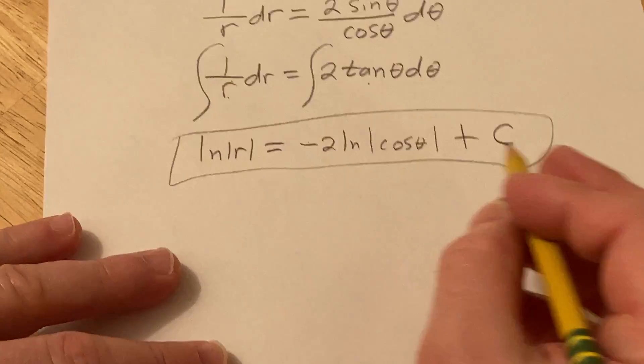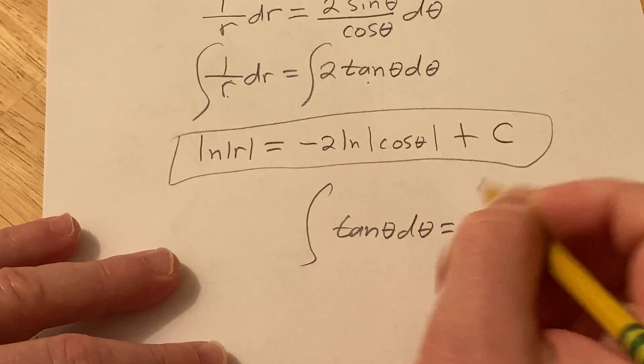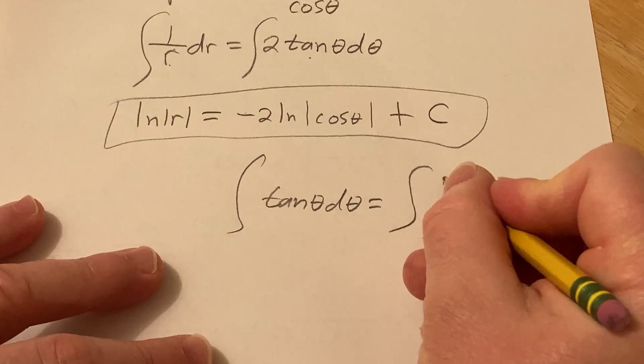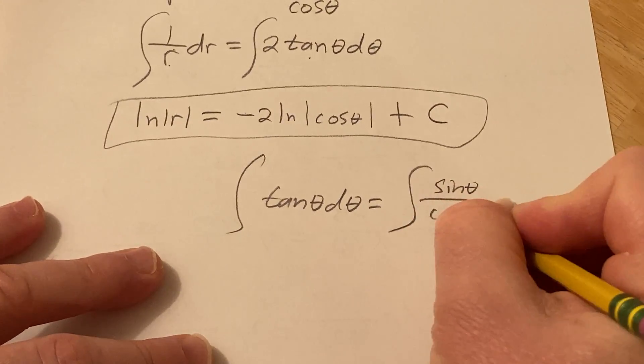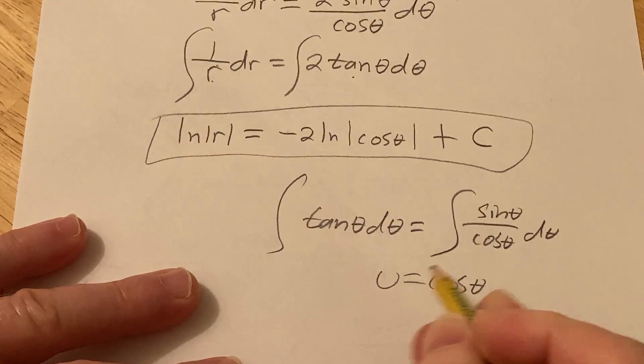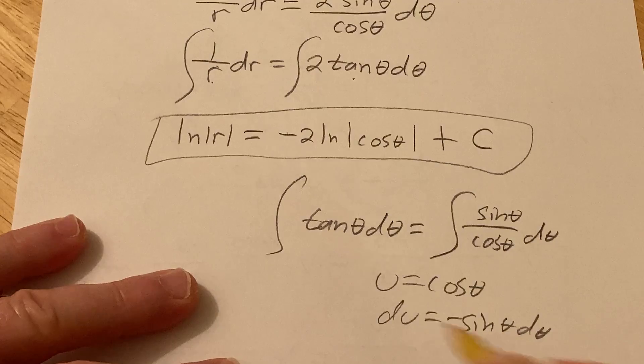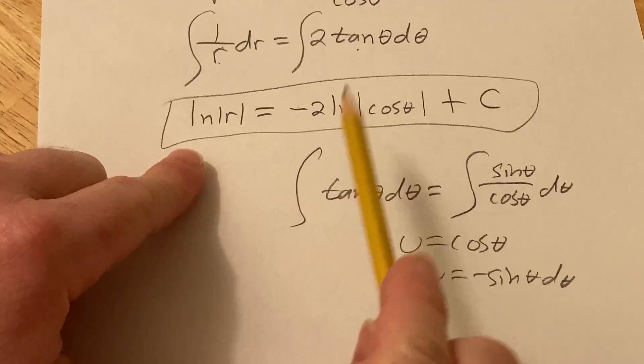If you don't know how to integrate tangent, write it as sine over cosine. Let u be cosine, so du is negative sine. Then you divide by the negative, and you'll end up with that.